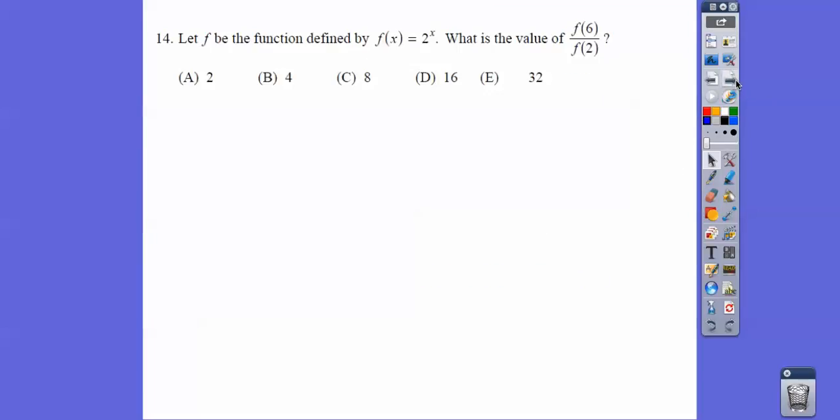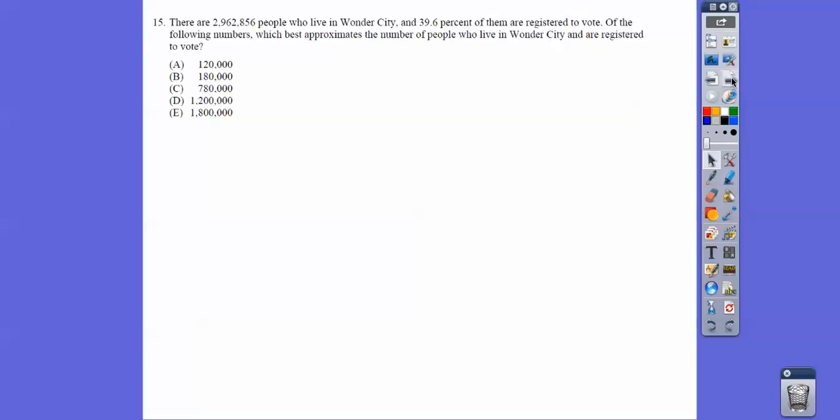All right, so let F be the function defined by 2 to the X. What's the value of F of 6 over F of 2? So 2 to the 6 over 2 to the 2nd. And then as long as these bases are the same, you can go ahead and subtract. Two 2's down here will take 2 of the 6 up here, so there's 4 left. 2 to the 4th is 16.